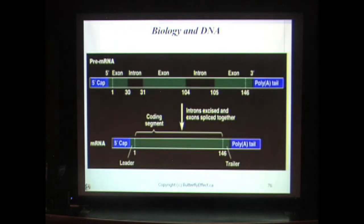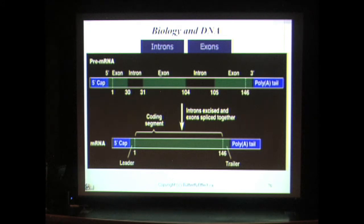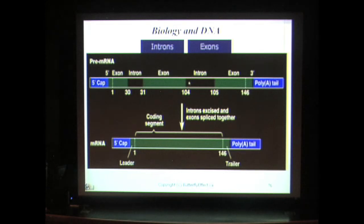There seem to be two different types of DNA segments that appear to be mutually exclusive — they're called introns and exons. Introns and exons alternate in the pre-mRNA. The introns are removed and the exons are spliced together to form the mRNA. Exons are segments of DNA that code for proteins. Introns are segments of DNA that are not used or not needed to create proteins. They're often referred to as junk DNA because they have no apparent purpose.